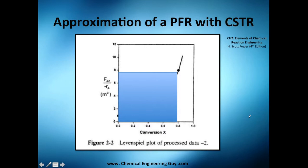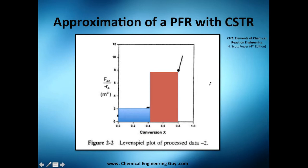The volume of a PFR will look like this on the graph. With only one CSTR — n equals one — there is excess volume like this. But what happens if we have two CSTRs? We're improving: this is excess and this is excess, with n equals two.